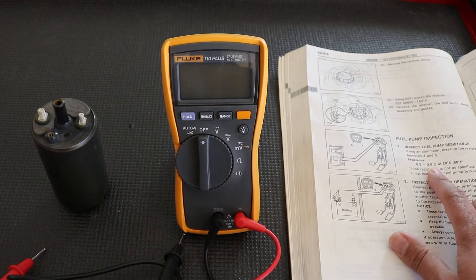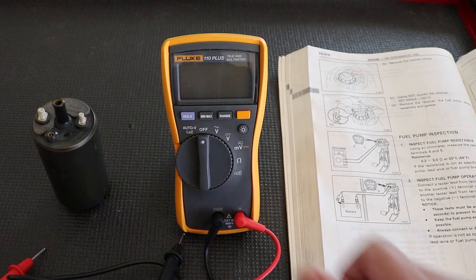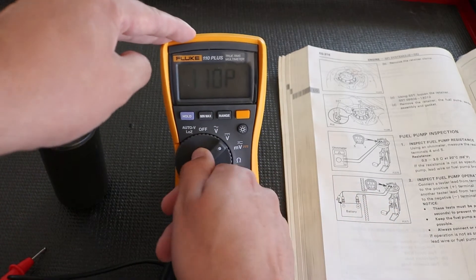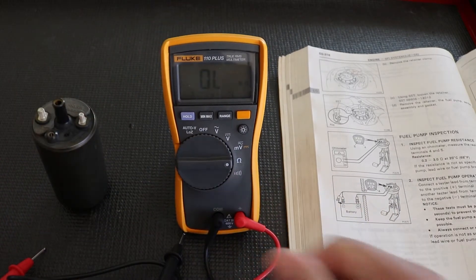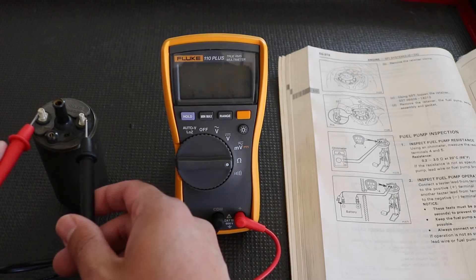In this case, our service manual tells us that we need to use an ohmmeter to measure the resistance between the terminals and that the resistance should be 0.2 to 3 ohms at 20 degrees Celsius or 68 degrees Fahrenheit. Now the temperature inside my home, because it's in the morning, does meet that criteria. It's kind of chilly. So let's go ahead and check out this resistance. We're going to get our digital multimeter, we're going to go ahead and put it on the ohm setting. We're going to get our leads and we're going to test the posts here, the terminal posts.